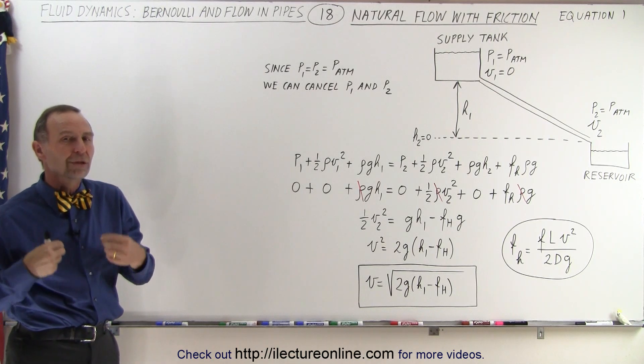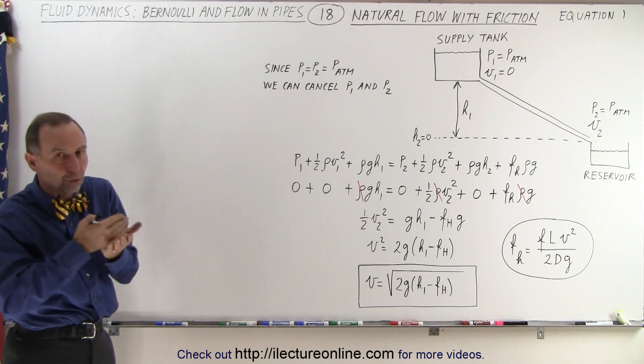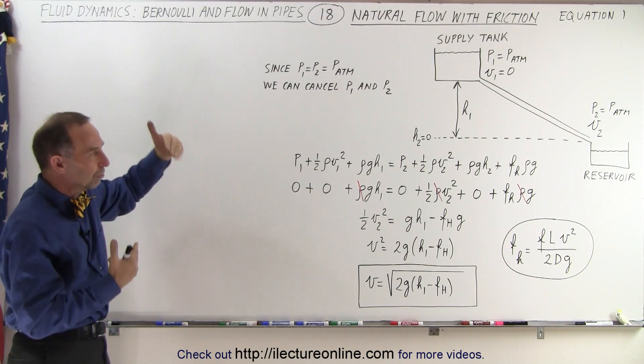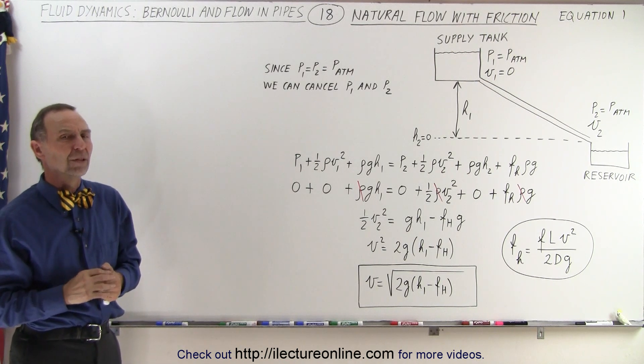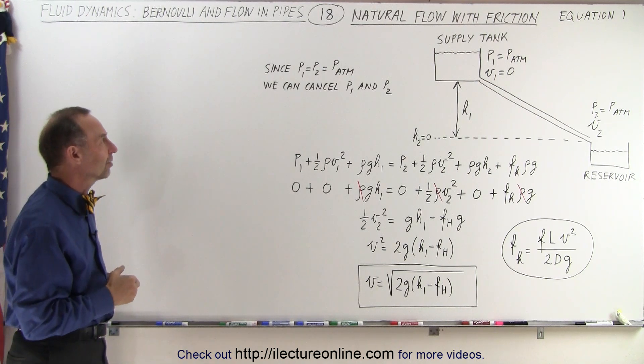But in this case we're including friction, so we know that the friction is going to be a drag on the flow and the water is going to come out at a lower velocity. So how do we determine what that velocity is?